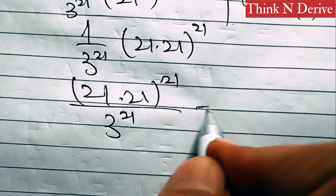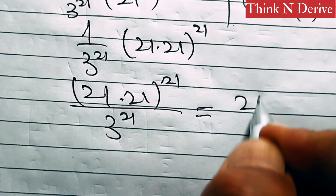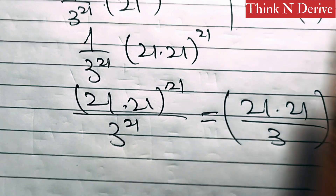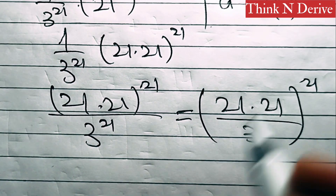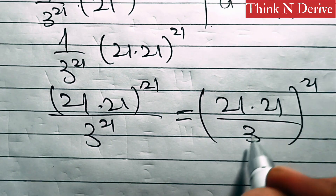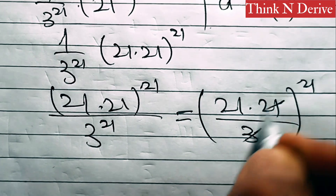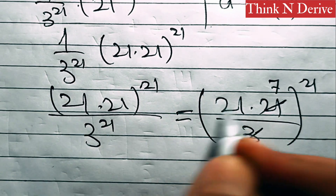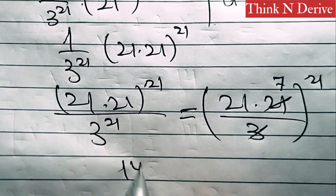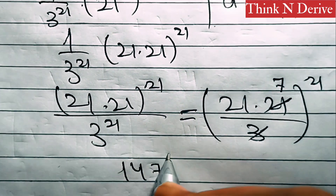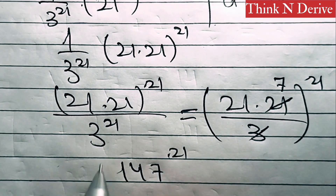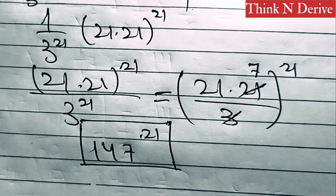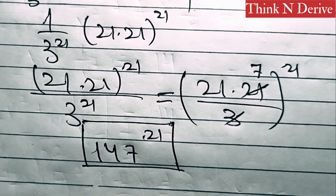Since the power in the numerator is 21 and the power in the denominator is also 21, this becomes (21 times 21 over 3) whole power 21. We can cancel 3 with 21 — 7 threes are 21 — so 21 divided by 3 is 7. Therefore this equals (21 times 7) whole power 21, which is 147 power 21. So 147^21 is the final result.